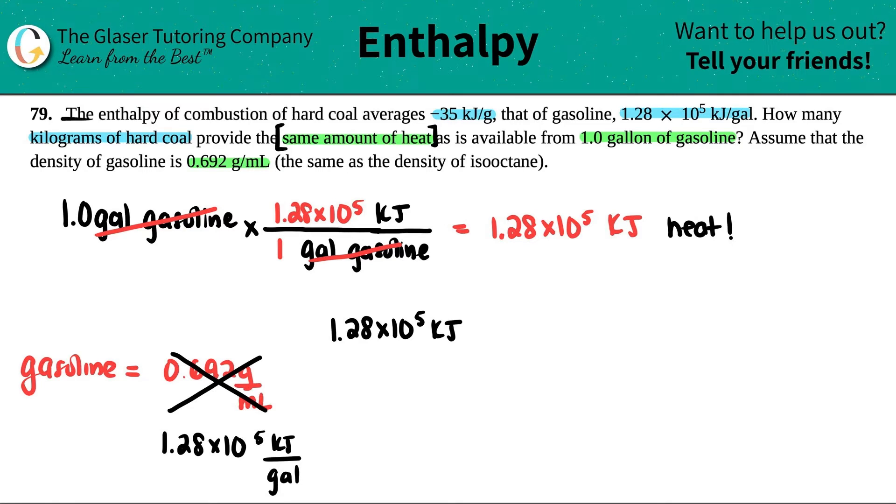They wanted to know how many kilograms of hard coal will I get. So let's list out everything that they told me about the hard coal. So for the hard coal, they only gave me one number, the heat of combustion or the enthalpy of combustion. They told me that it was a negative 35 kilojoule per gram.